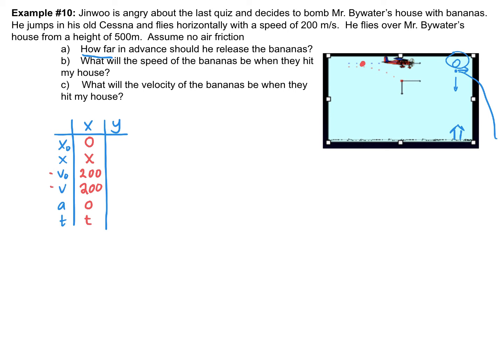The problem says I'm flying from a height of 500 meters, so vertically I'm starting up at 500 meters. When the bananas get to the ground they're going to have a height of zero meters — right as it hits my house. The initial vertical velocity: as the plane is flying horizontally, it doesn't have any vertical velocity. We have to separate those two things in our minds. So our initial vertical velocity is zero.